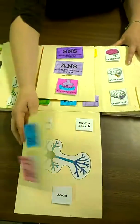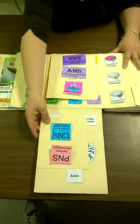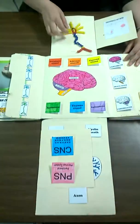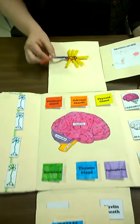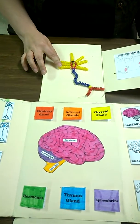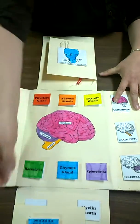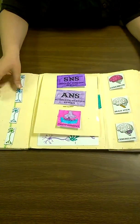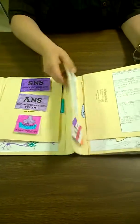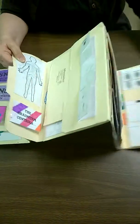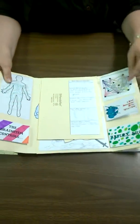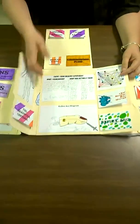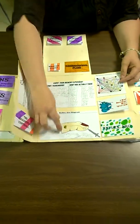Then we have the nervous system. We made a beaded nerve, which was a lot of fun. This really was, I think, the biggest lapbook on the face of the planet by the time we got done with them.